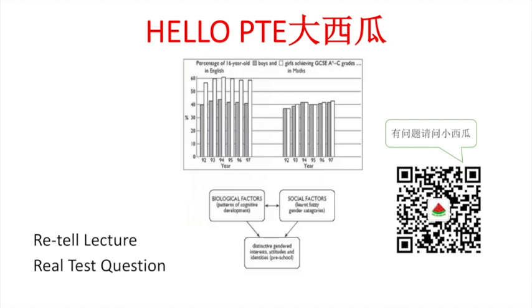The argument uses this evidence to show that biological factors, such as patterns of cognitive development, are closely linked to social factors, such as learned gender categories.